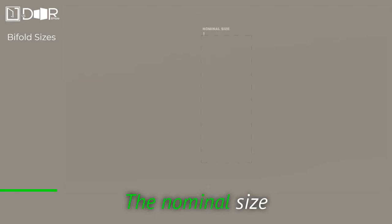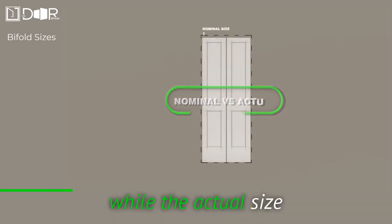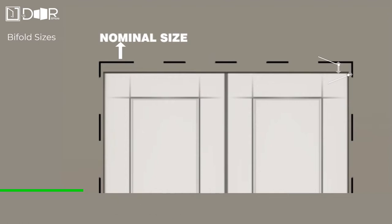The nominal size categorizes the door, while the actual size denotes the precise dimensions, often up to 1/2 inch less in width and 1 inch shorter in height.